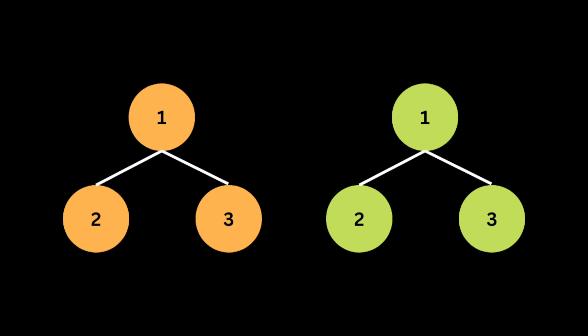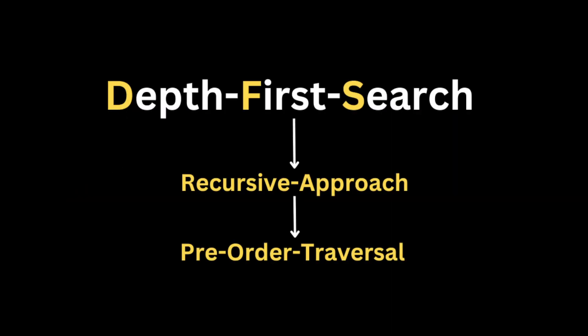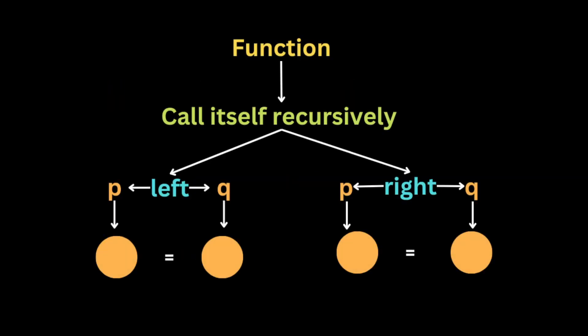To solve this problem we're going to use the recursion technique, or the depth-first search technique, where the function will recursively traverse the two binary trees and go as deep as it can in both directions — left and right. This is also known as a pre-order traversal.